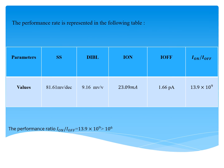To study the performance of the device, we calculated different parameters such as SS, DIBL, on-current, off-current, and the Ion/Ioff ratio. The performance values are: SS = 81.61 mV/decade; DIBL = 9.16 mV/V; on-current = 23.09 mA; off-current = 1.66 pA; and Ion/Ioff ratio = 13.9 billion. The International Technology Roadmap for Semiconductors (ITRS) recommends an Ion/Ioff ratio of more than 1 million; our device simulation exceeds this value.